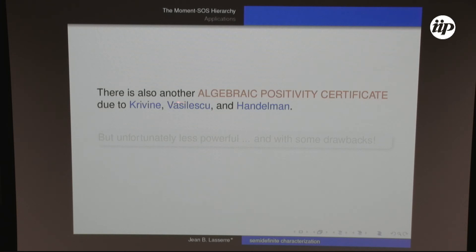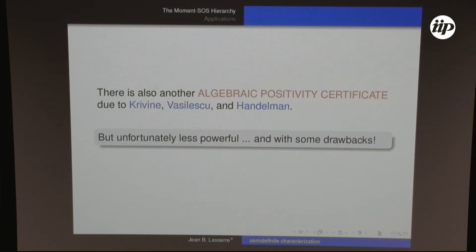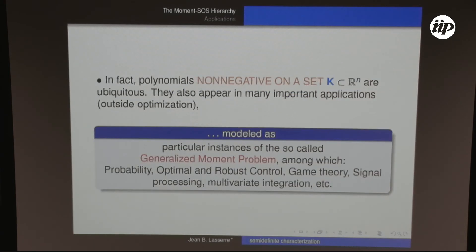There is also another algebraic positivity certificate due to Craven, Basilescu, and Handelman, but unfortunately it is much less powerful than the SOS one and has definite drawbacks for optimization applications.